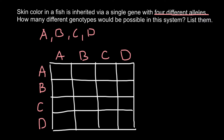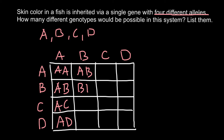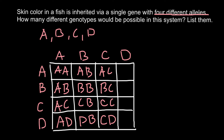Let's first list them. So we have: AA, AB, AC, AD in the first row. Then AB, BB, BC, BD. Then AC, BC, CC, CD. And AD, BD, CD, DD. That gives us all cells of the four-by-four grid.